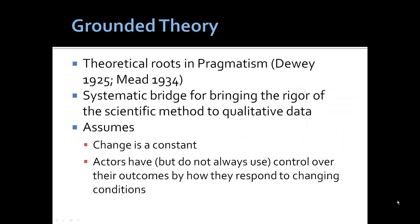Grounded theory has its roots in pragmatism. The procedures and canons for grounded theory provide a solid foundation on how to organize a research project using observational or other qualitative research data. The strategy has its roots in the early Chicago school, especially the work of Dewey and Meade. It provides a systematic bridge for bringing the rigor of quantitative methods — the scientific method — to qualitative research.